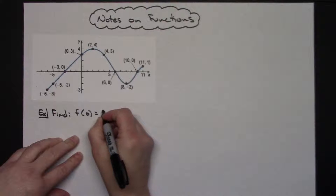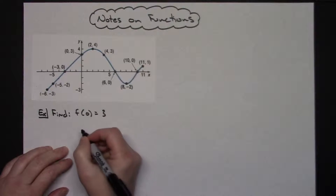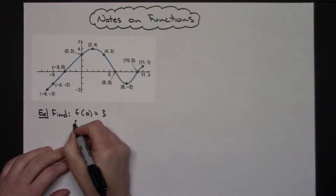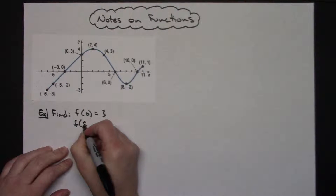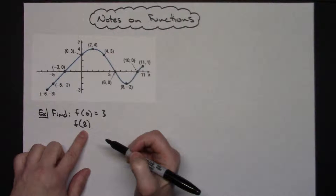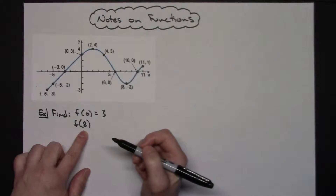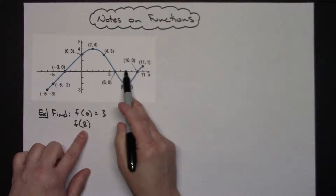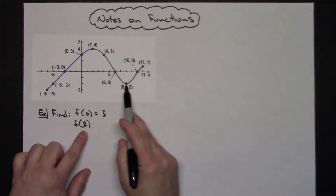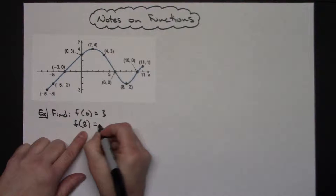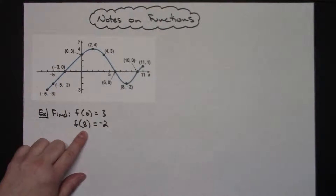At x equals 0, the point is at (0, 3), so I get an output of 3 — f of 0 equals 3. Let's do another one: f of 8. That's telling you to take 8, put it in the function, go along the x-axis to 8, come down, and you can see the function gives a y value of negative 2. So f of 8 equals negative 2.